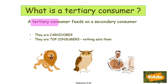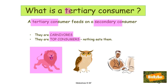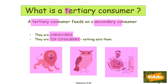A tertiary consumer feeds on a secondary consumer. You go to third-level or tertiary education after secondary school. Another way to remember it: 'T' for top and 'T' for tertiary. Tertiary consumers are top consumers — nothing else eats them. They are top carnivores. The lion is a top consumer or tertiary consumer, top of the food chain. The wise owl is a tertiary consumer — nobody else eats an owl. The human being is a tertiary consumer, because hopefully nobody else will eat us.